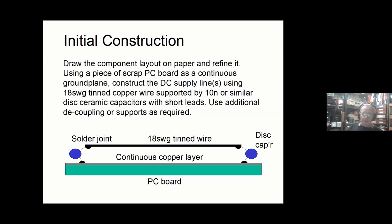I use support components for mechanical supports — in my case, 10 nanofarad disc ceramic capacitors with thick leads, which make ideal mechanical supports and also give a degree of decoupling. If you need a plus 9 or 12 volt supply line, mount two capacitors on one edge of your scrap PCB, join them with 18-gauge tinned copper wire, and use another capacitor as a support in the middle. They're very cheap and easy to use. A continuous copper layer single-sided PCB is all that's needed.